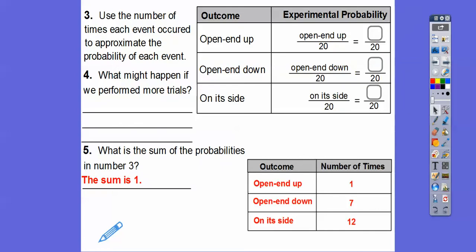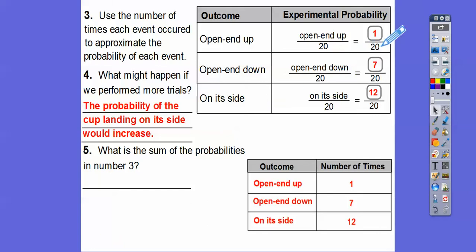Use the number of times each event occurred to approximate the probability. Remember, we did it 20 times. We tossed that cup 20 times. So what might happen if we perform more trials? Open-ended up is going to be how many times it happened out of the 20, so that would be 1 over 20. Open-ended down would be 7 over 20, and this would be 12 over 20. What might happen if we perform more trials? We just keep going, and the probability of the cup landing on the side would increase. What is the sum of these probabilities? We're going to add these. They all have common denominators of 20. 1 plus 7 is 8, 8 plus 12 is 20. So we get 20 over 20, which equals 1.